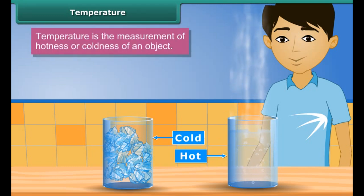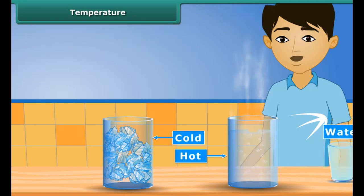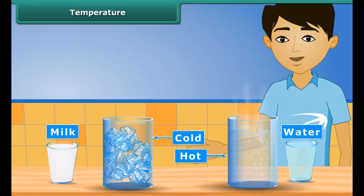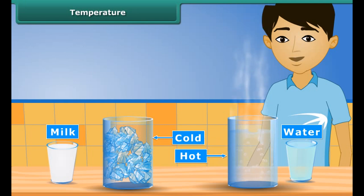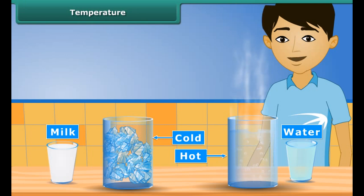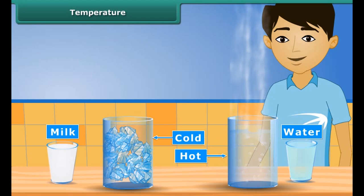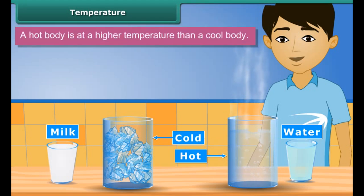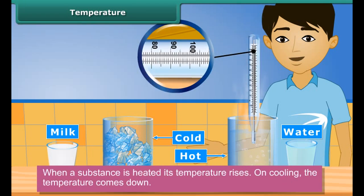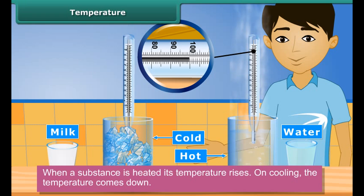Now we will learn the concept of temperature. Temperature is the measurement of hotness or coldness of an object. We say that water from the fridge is cold and milk is hot — but how cold is the water? Is it cooler than ice? How hot is the milk? Is it hotter than boiling water? For this, we need a measure to know about the coldness and hotness of a body.